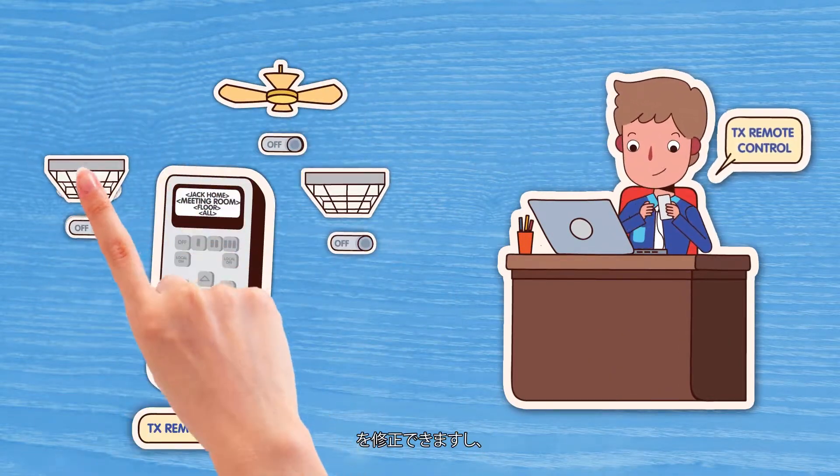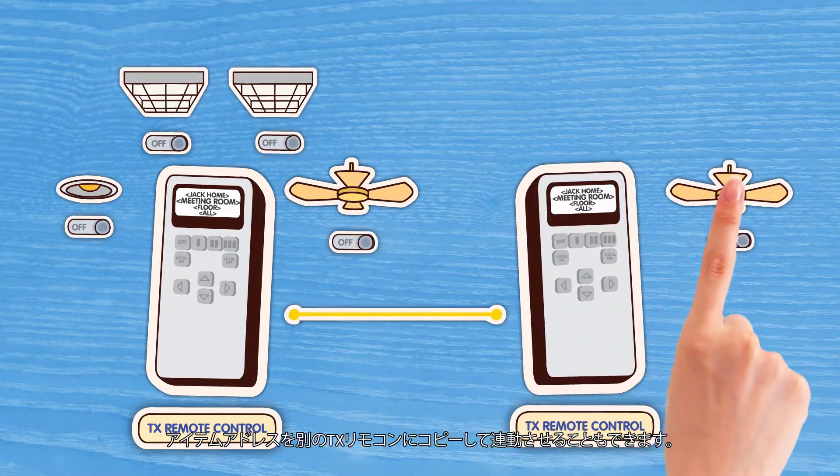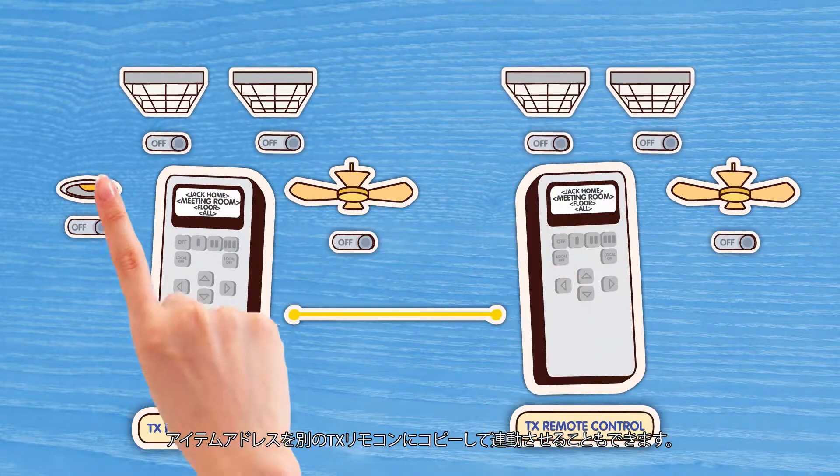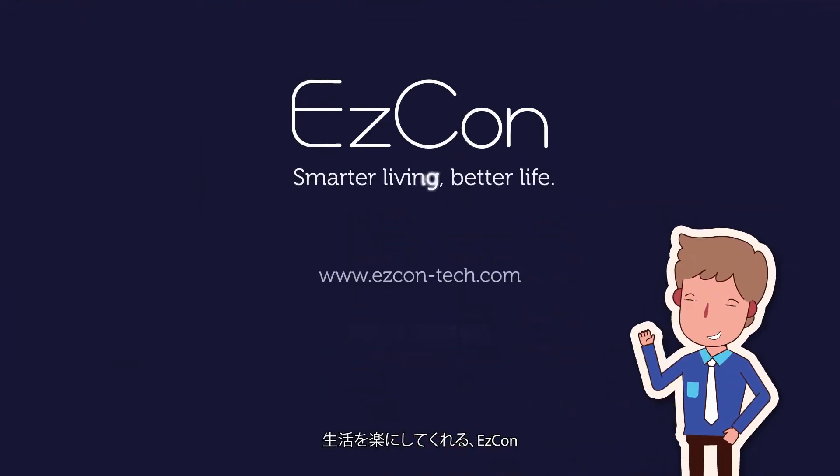You can always go back and change anything you want from the program and directly copy the object addresses to other TX Remote Controls by connecting them together. ESCON. Smarter living. Better life.